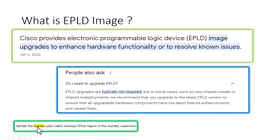There is something called golden EPLD that runs on the backup supervisor. Since these 9300s are standalone switches, they do not have a backup supervisor. So golden EPLD upgrade is not required for these switches.